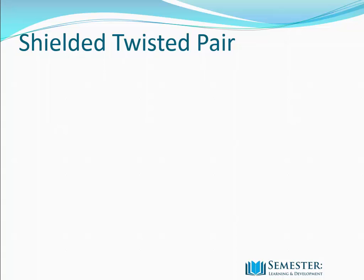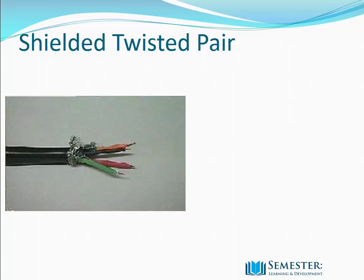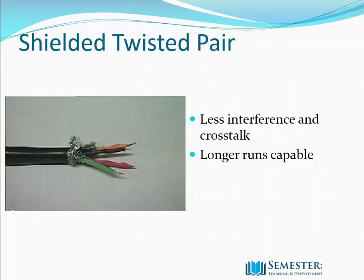Next is Shielded Twisted Pair, or STP. It works like unshielded twisted pair but with the addition of a foil or copper shield which reduces interference and crosstalk. Because of the shield, the cable is more expensive, heavier, and more difficult to install. The shield must be connected to earth, but only at one end.